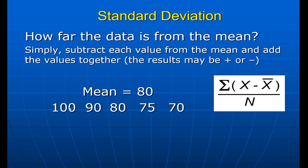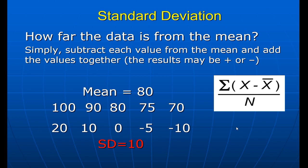If I have a mean of 80, the first value is 100: 100 minus 80 equals 20. Then 90 minus 80 equals 10. If a value is 80, it is zero, and so on. All those differences are collected and then divided by the number of data points to give the standard deviation. In this demo example, the standard deviation is 10. This is the simplest equation for standard deviation — you must understand it.